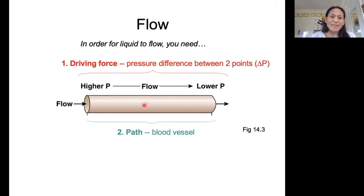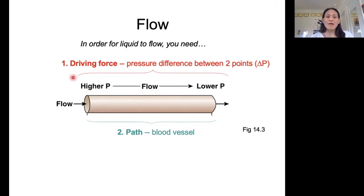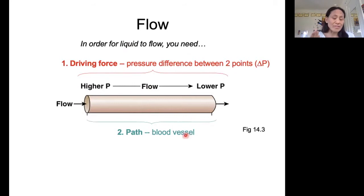The second thing that you're going to need is a path for that blood to flow through. So if you had a pressure difference but this whole pathway was blocked off, you wouldn't get any flow of your blood from this location to this location. We need a path, and the blood vessels act as that path.